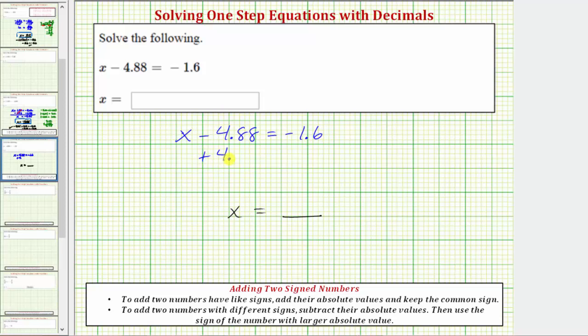Adding 4.88 on the left side will undo the minus 4.88, and whatever operation we perform to the left, we must also perform to the right to maintain equality.